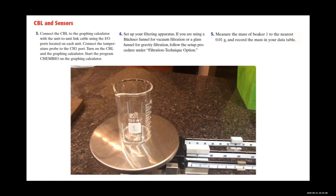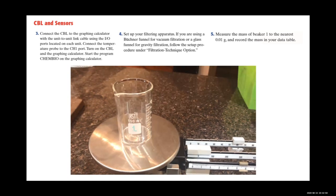For the CBL unit instructions, these are slightly altered since we did not use the graphing calculator — we used only the CBL and the temperature probe. Connect the temperature probe to the CH port and turn on the CBL. We skipped the graphing calculator program and just used the CBL as a probe. Set up your filtering apparatus following the appropriate setup procedure for either vacuum or gravity filtration. Measure the mass of a beaker to the nearest 0.01 gram and record it in your data table.